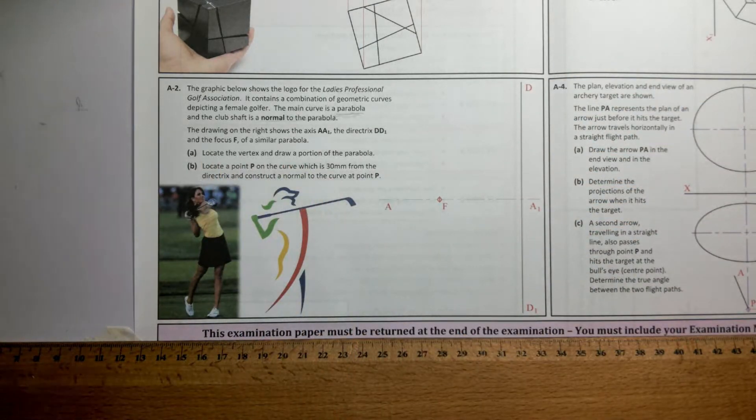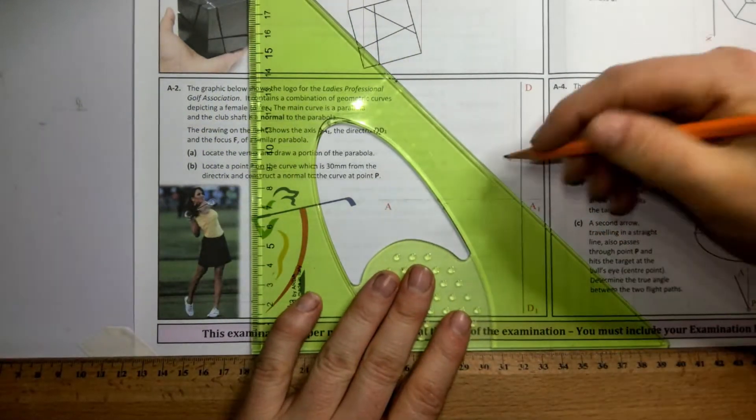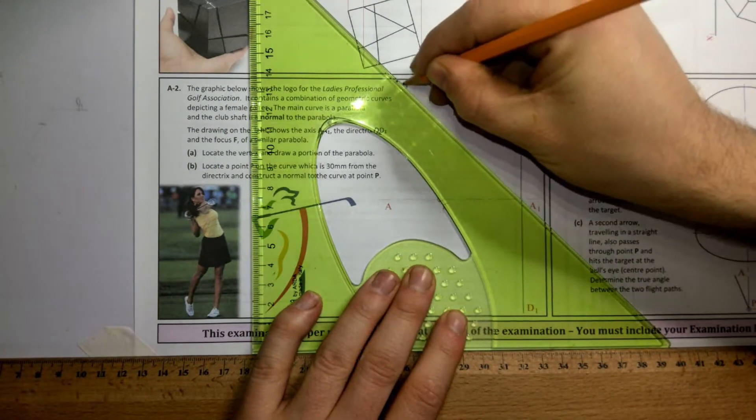Locate the vertex and draw a portion of the parabola. I'm going to draw it using the eccentricity method. The line of eccentricity for a parabola is always 45 degrees.